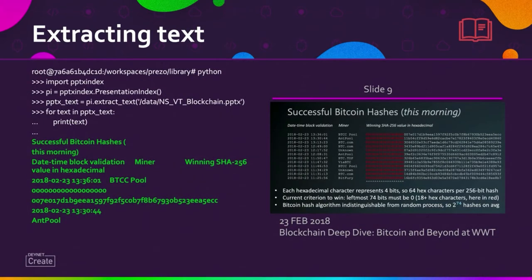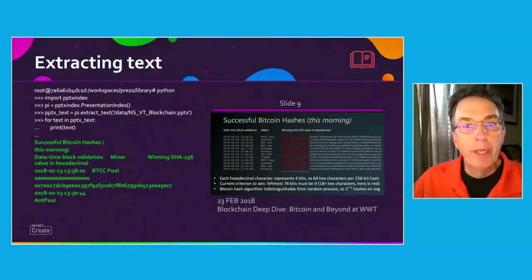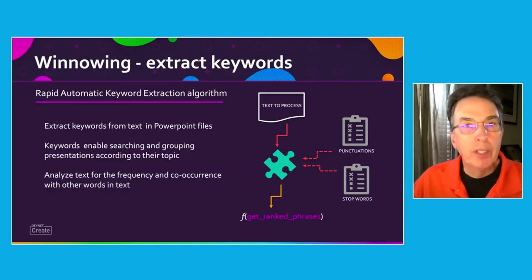This is an example — slide nine of a presentation done in 2018 for an internal WWT session on blockchain and Bitcoin. In this code snippet, we call a Python class which in turn calls the PPTX utility, give it the name of a PowerPoint file, and extract the text out of all of the slides in that file. In this example we can see there's a title, column headers, some data, and bullet items at the bottom. We end up with a list of strings containing all of that text. Some information is important to us, and some isn't — which takes us to the next aspect: winnowing, or separating the chaff from the wheat.